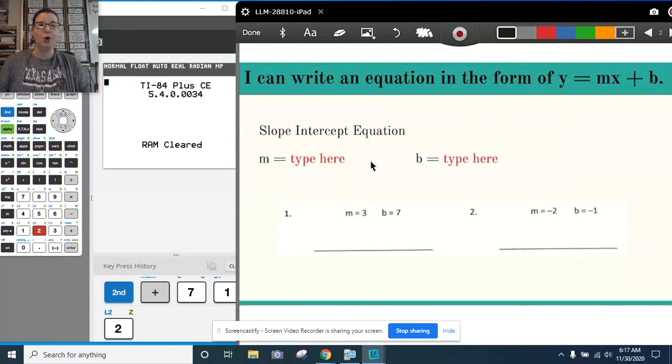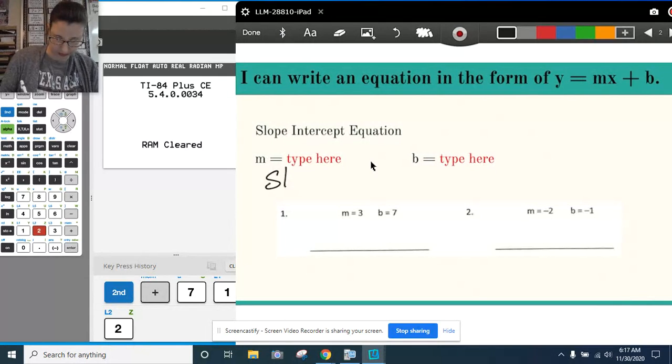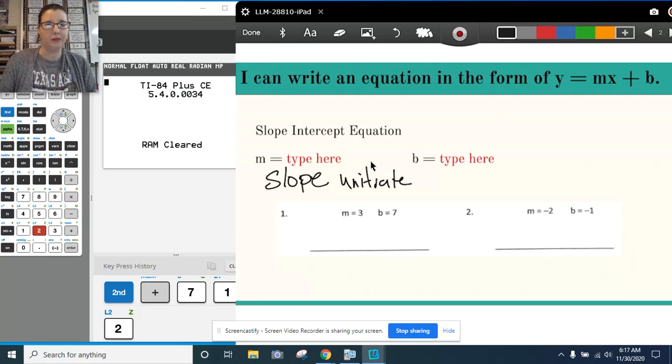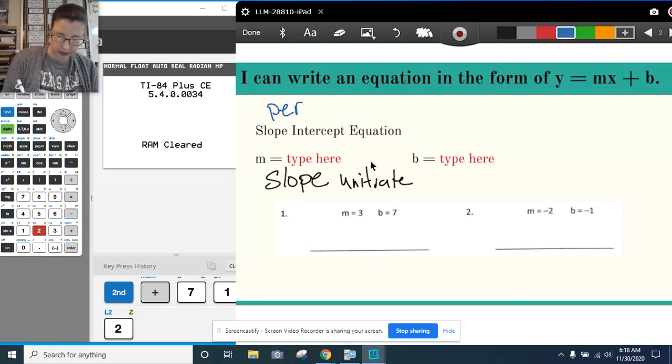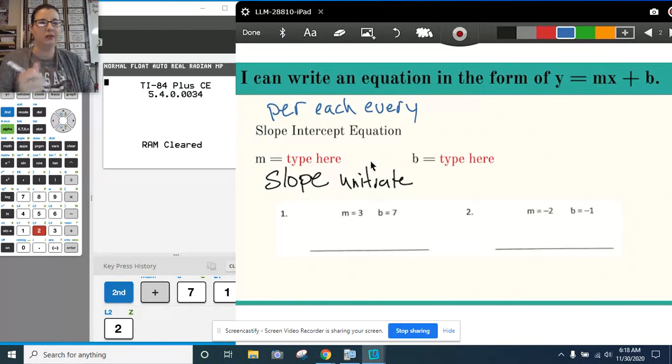So we first want to review what is m and what is b. When we're looking at m, m represents our slope. So it's your change over y over your change over x. It also talks about our unit rate. And when we're looking at word problems, we know that our slope is generally the number that comes before the words per, each, every. So all of that information is your m or your slope.